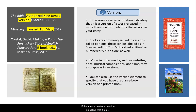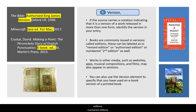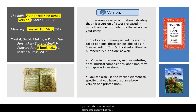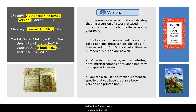If the source carries a notation indicating that it is a version of a work released in more than one form, identify the version in your entry. If it doesn't, leave it out. Sometimes books have different versions they call editions — these can be authorized editions, numbered editions, or revised editions. Works in other media can have numbered versions, or there could be a difference in a DVD or streaming version of a film or video. You can also use the version element to specify that you have used an e-book rather than a print book. MLA does not specify whether the E in e-book is capitalized or not — check with your professor to see which they prefer and be consistent throughout your Works Cited.